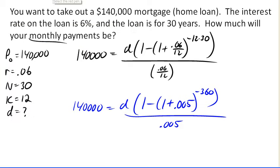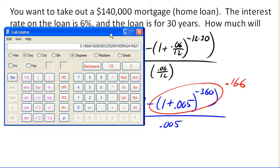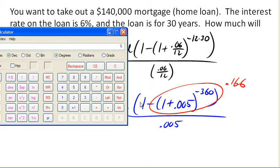So all of this is .166 approximately. And so now I need to evaluate 1 minus that. So 1 minus .166. Divide that by .005. gives me 166.8 roughly.